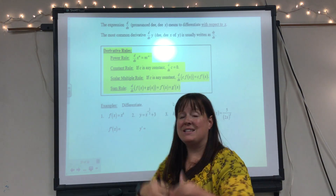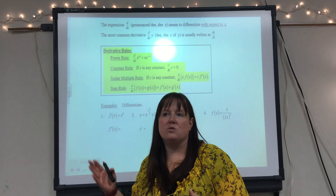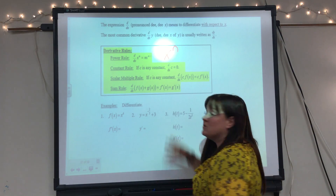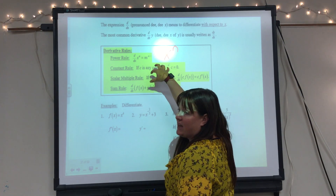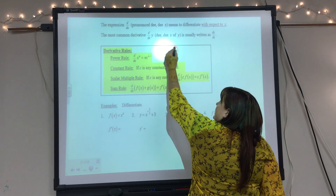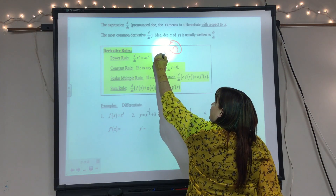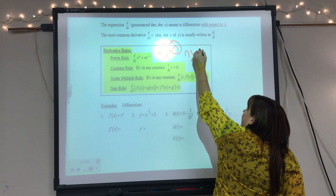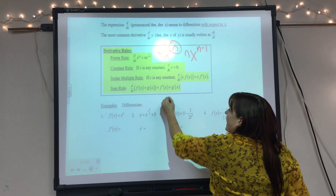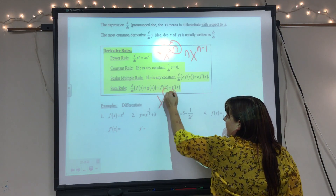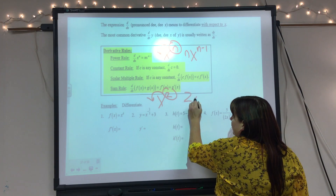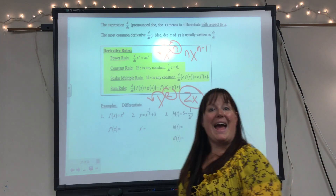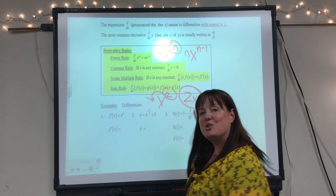The power rule says that if we have x to some power, to find the derivative all we have to do is take that power, put it in front of x, and then subtract one from the power. So we end up with n·x^(n−1). For something like x squared, we bring the 2 in front and subtract one from the power — 2 minus 1 is 1 — so the derivative of x squared is 2x. That's a lot faster than the limit definition.